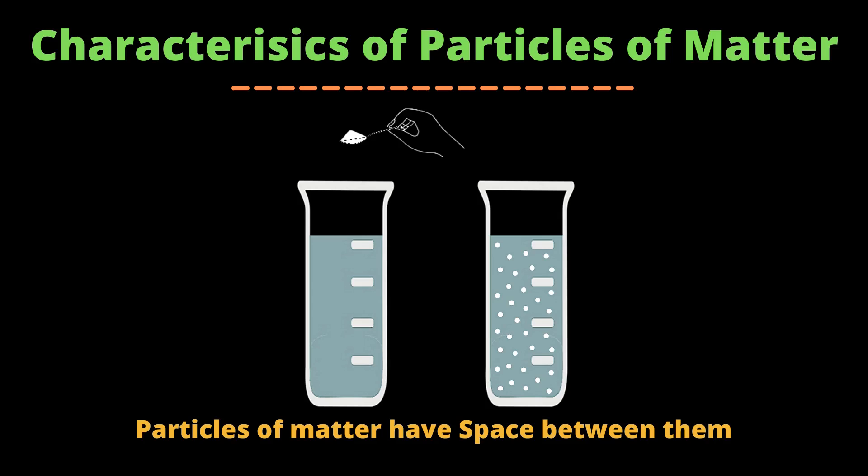This happens because particles of water have space between them, and while intermixing, the particles of salt and sugar just fill up these spaces, so the volume of water remains the same. From this we can conclude that particles of matter have space between them. In solids the space between particles is minimum, in liquids it is more than solids, and in gases it is maximum.